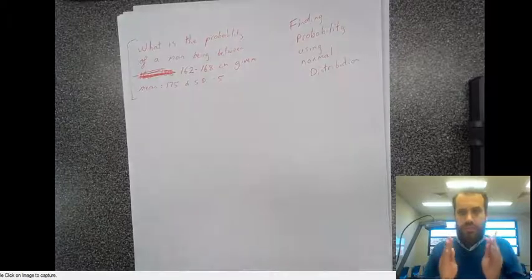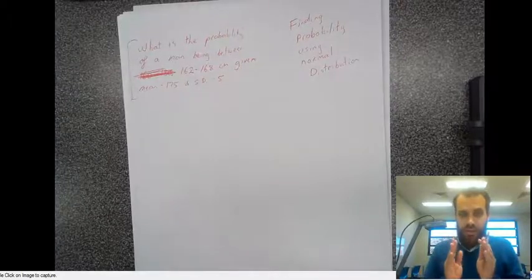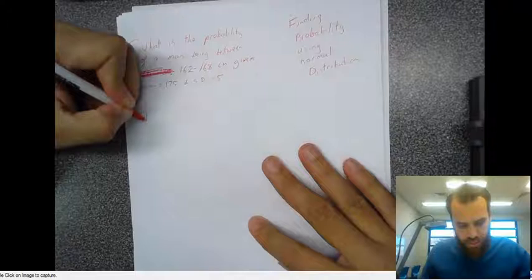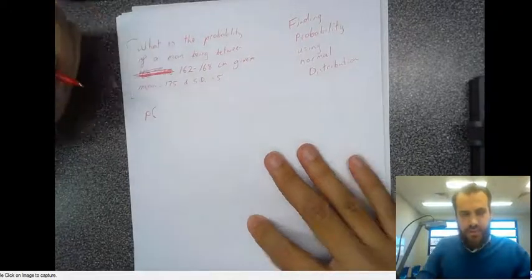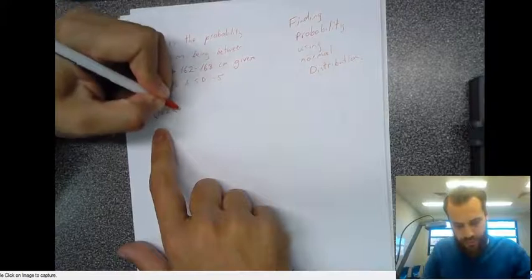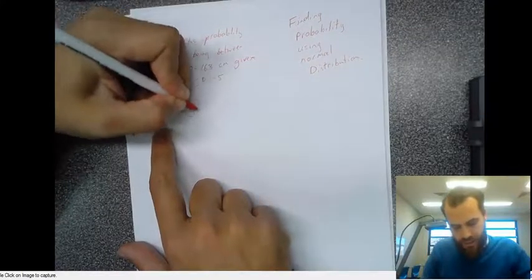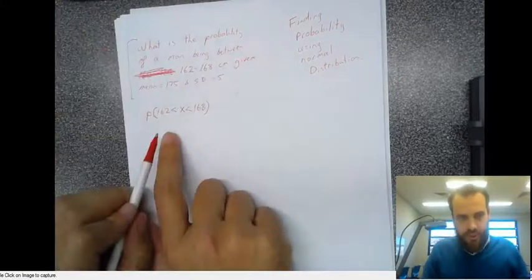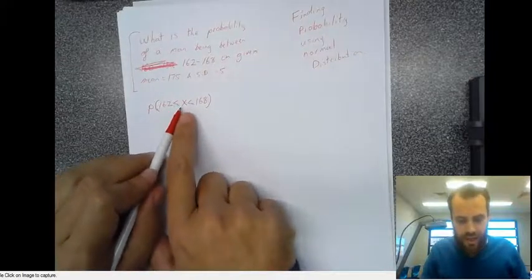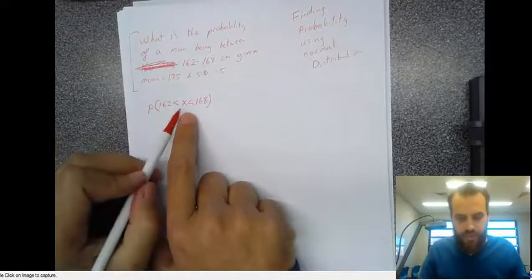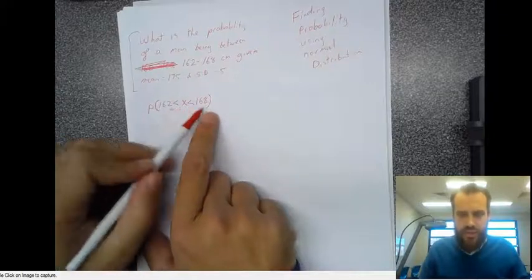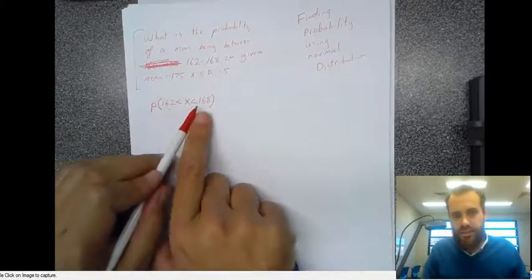So we want to know what's the probability of someone being in a certain range. There's a little bit of notation here. We want to know the probability that someone is between 162 and 168. Let's just read what that says. We want to know the probability that 162 is less than x, the person, and the person is less than 168. It's just a fancy way of saying between 162 and 168.